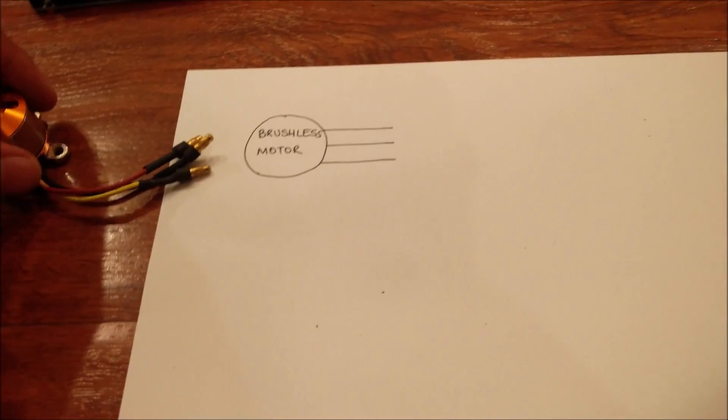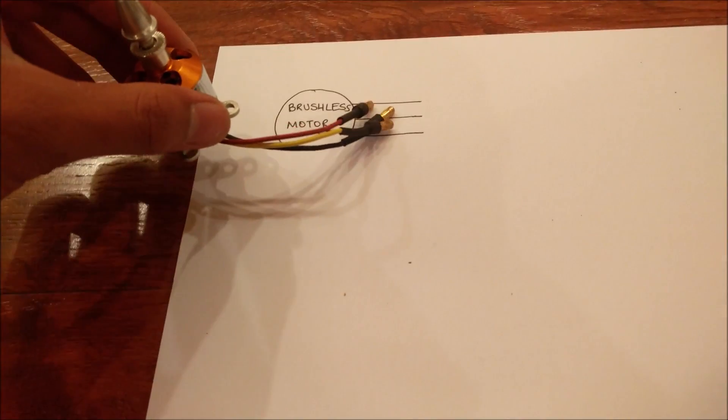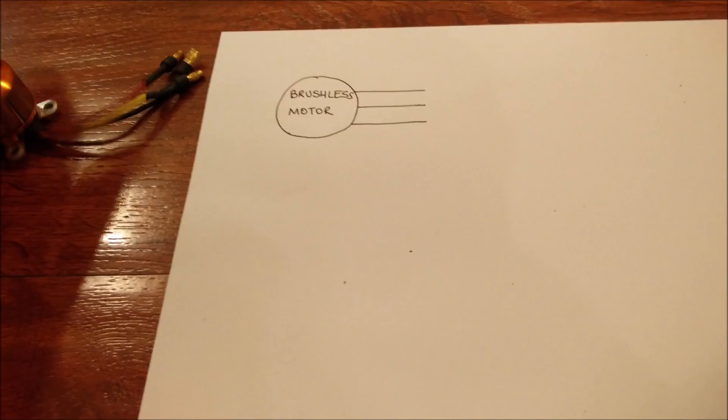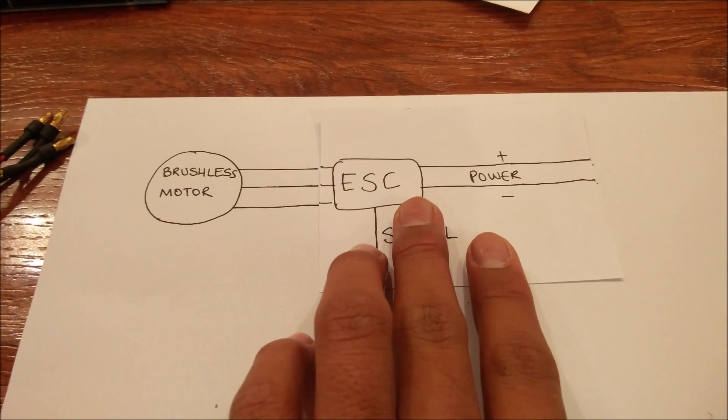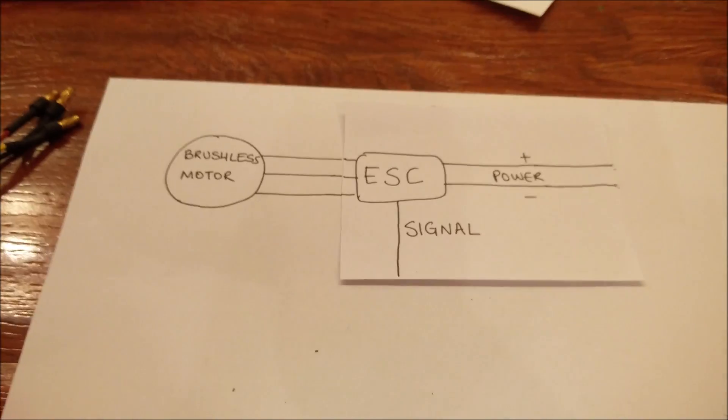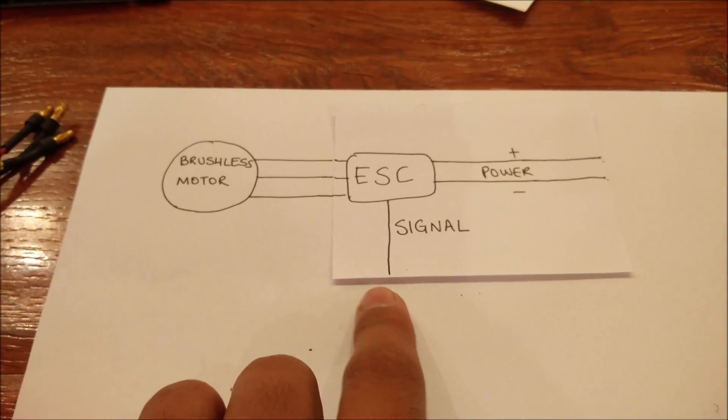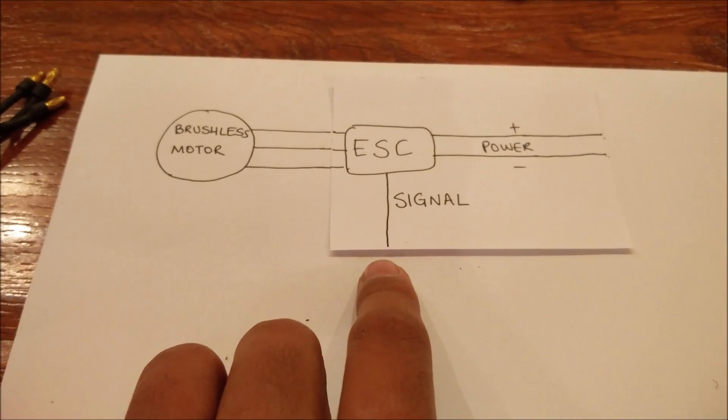Alright, so first we have our brushless motor which has three wires coming out of it. There are obviously four of these motors connected to four of these ESCs. An ESC stands for electronic speed controller. It controls the speed of the motor according to the signal that is given by the flight controller board or the Arduino.